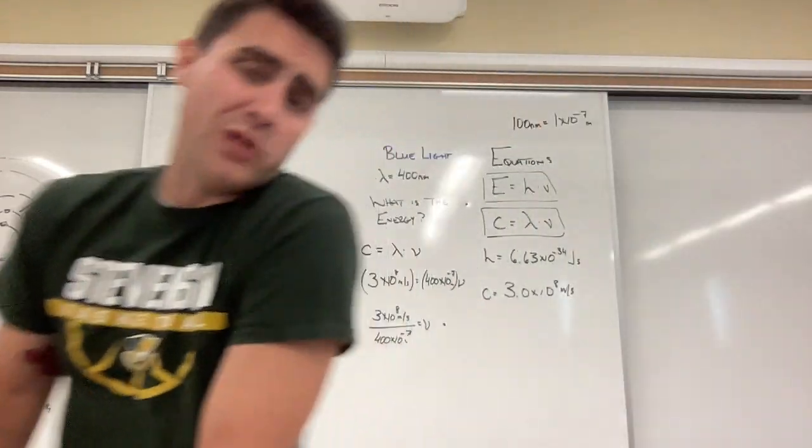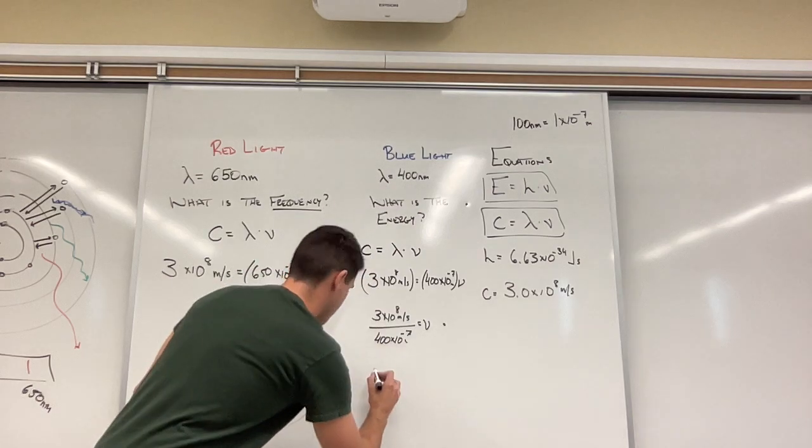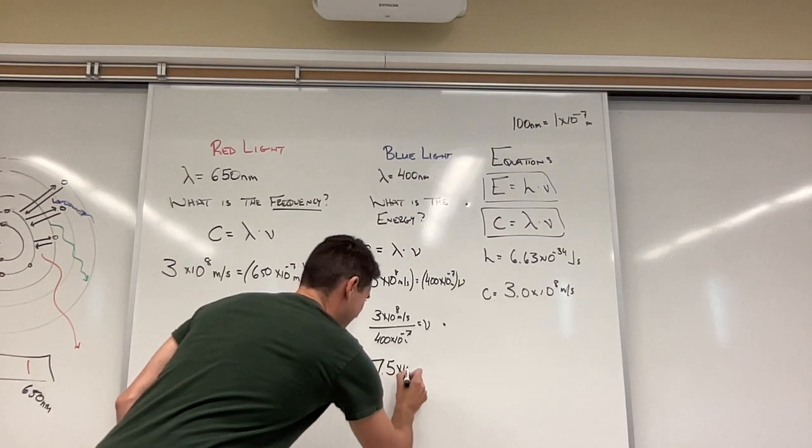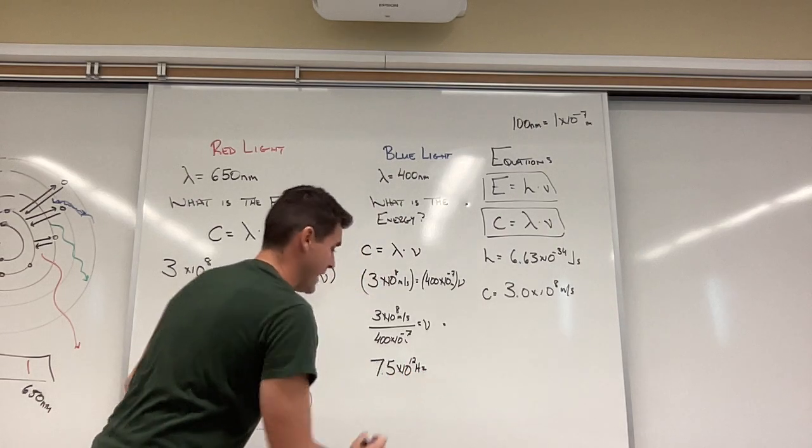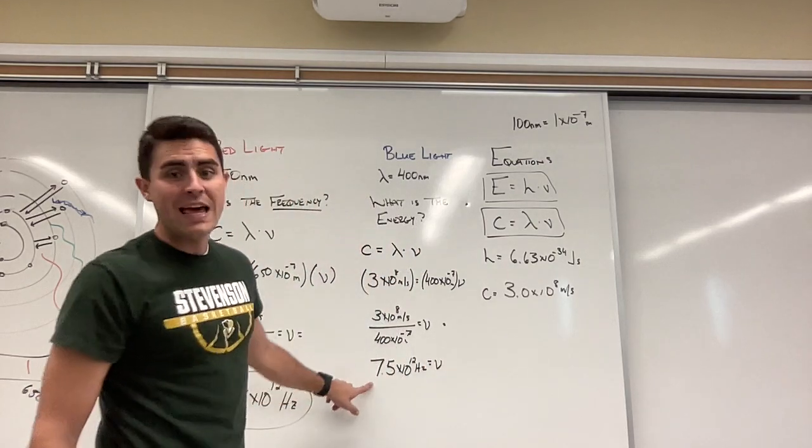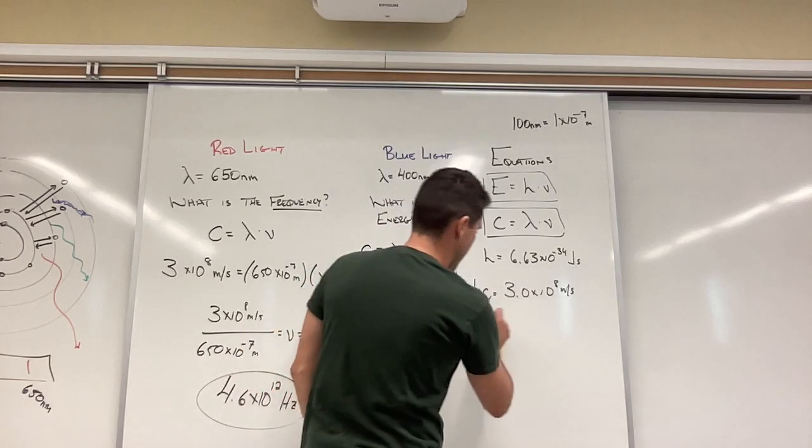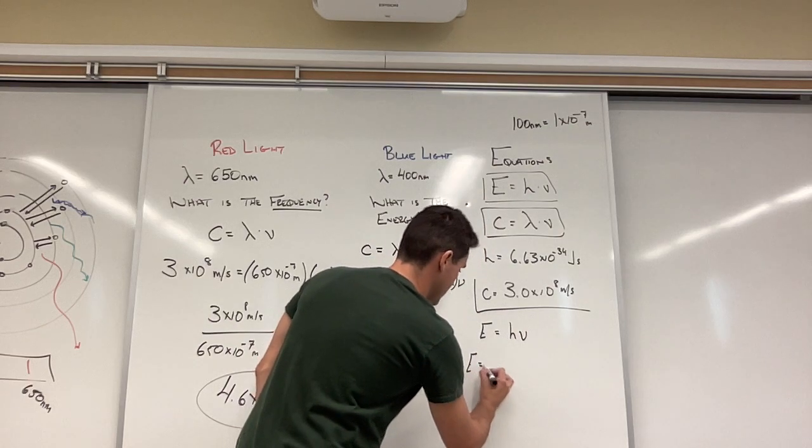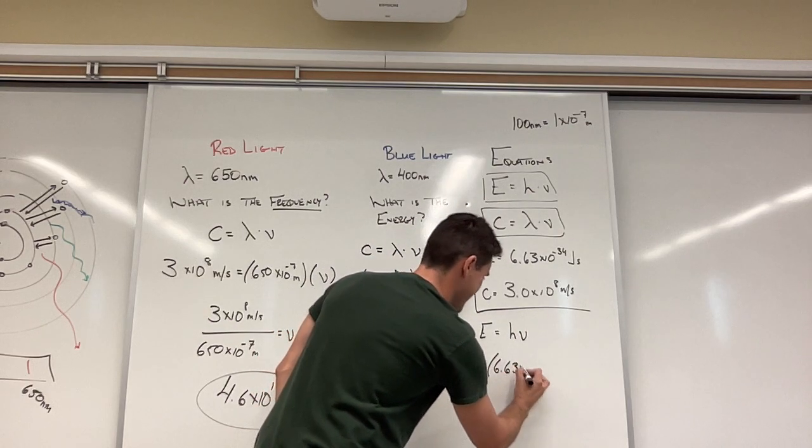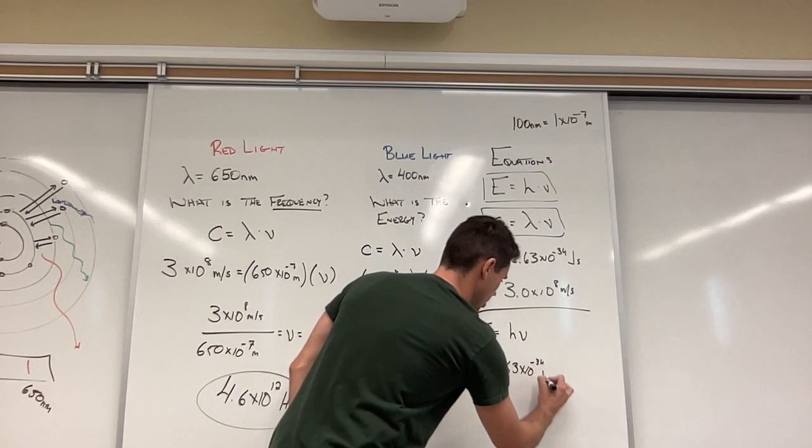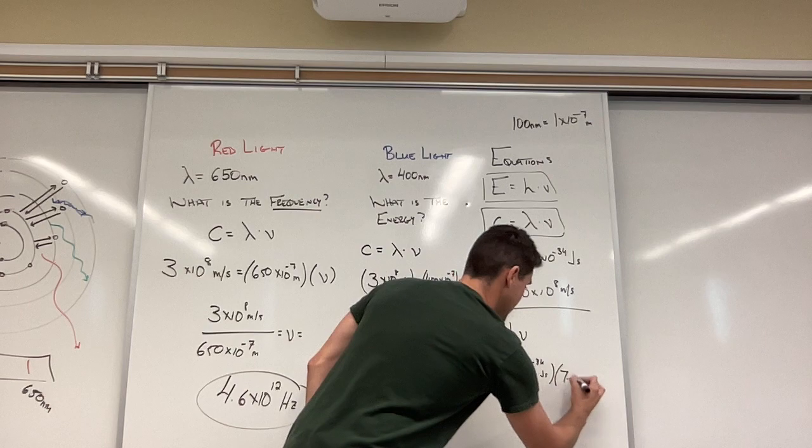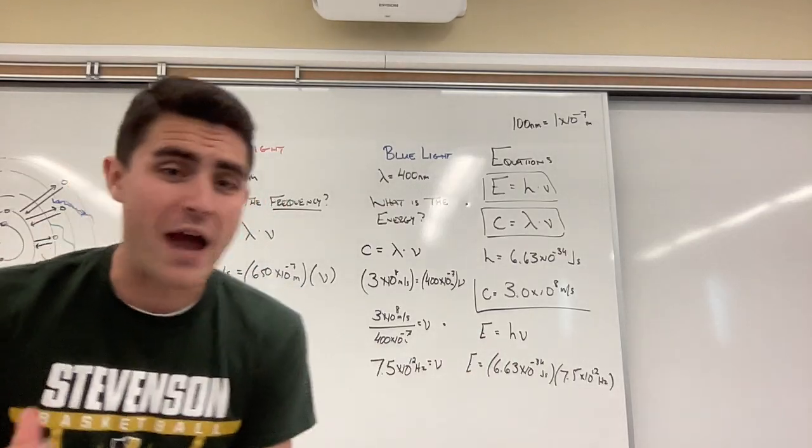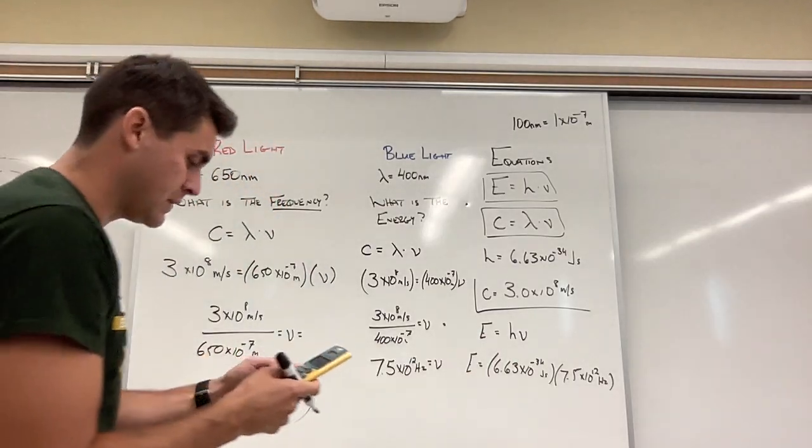When I do that, I get a much higher frequency, which is good. Blue light is higher frequency. And that frequency ends up being 7.5 times 10 to the 12th hertz. Is that my answer? No. That's my frequency. And now that I have this, I can use my energy equation over here to go ahead and solve the remainder of this problem. Energy is equal to Planck's constant, which is 6.63 times 10 to the negative 34th joule seconds times the frequency, 7.5 times 10 to the 12th hertz. There's my problem.